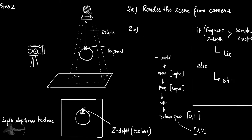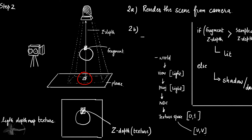If the z-depth of the fragment from the light is greater than the sampled z-depth, the test fails and the fragment will be in shadow or in the dark. For example, when rendering a fragment of the plane, its z-depth from the light is tested against the sampled depth map value. This test fails because the depth map stored the z-depth of the sphere fragment, which was at a lesser distance, so the plane fragment is marked as in shadow. That is how a shadow is formed on the plane.